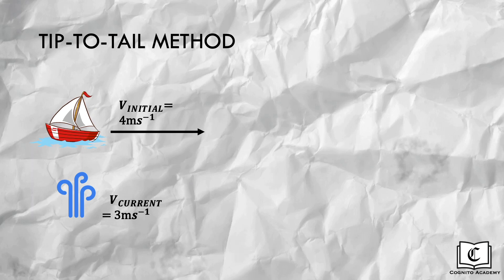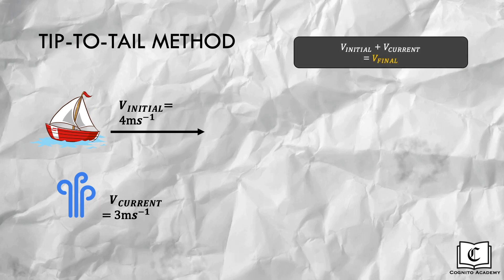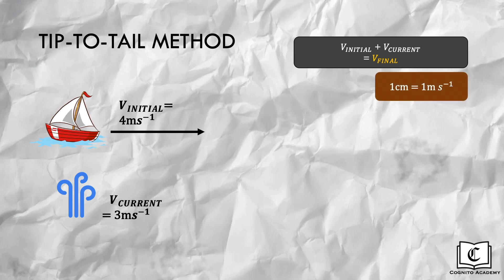We will first use the tip-to-tail method. First, we come up with a vector equation to know which two vectors we are adding. In this case, since it is the initial velocity and the current that results in the final velocity of the boat, we add the initial velocity and the current vector together to get the final velocity vector. Second, we choose a suitable scale — here, 1 cm for every meter per second.